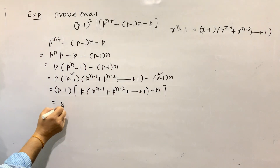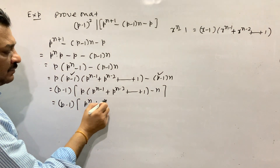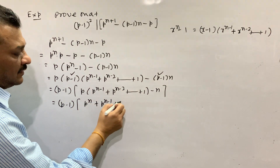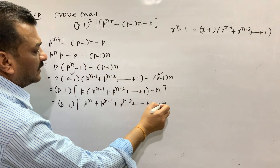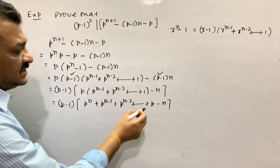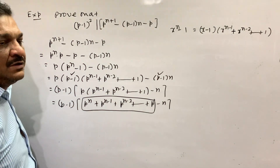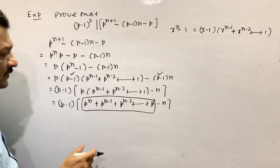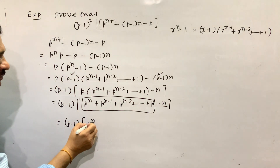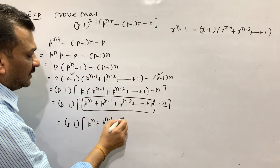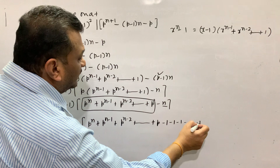So this is the power n minus 1. This question involves power n, power n minus 1, power n minus 2, and so on down to minus 1.